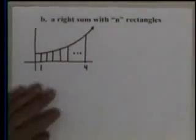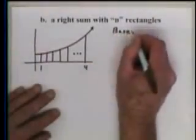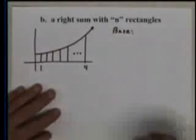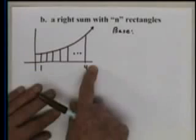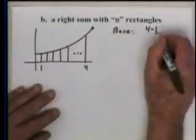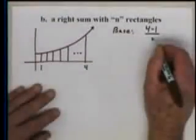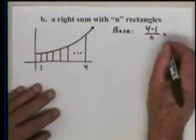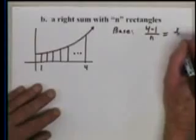So okay, first of all, we have to figure out what the base is. When you're using n rectangles, now you have to observe the pattern, but how can you find the base? We did it last time. You take the difference between the endpoints and divide by the number of rectangles. So how long is each base? Three over n.